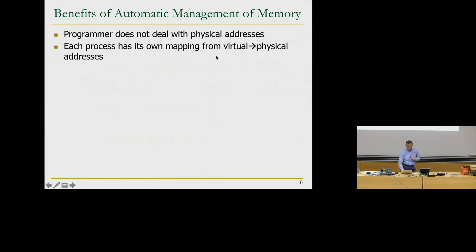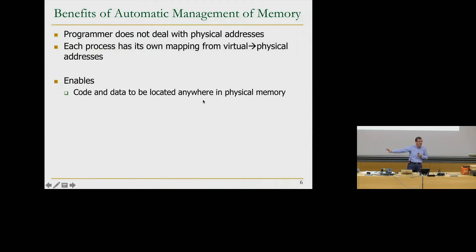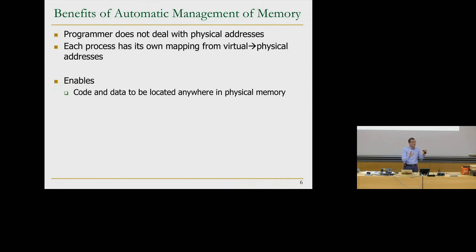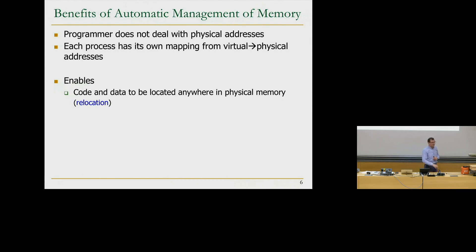The benefit of automatic management of physical memory: the programmer doesn't need to deal with physical addresses. Each process has its own mapping from virtual to physical addresses. This enables code and data to be located anywhere in physical memory, because the system software manages the mapping. The programmer doesn't try to decide where data gets placed — that's the system's job. This enables relocation: if some part of physical memory is not available, you can put the program into another part. That's essential for system management.